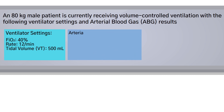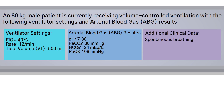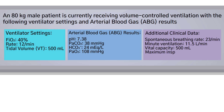His ABG results are as follows. Some additional clinical data includes a spontaneous breathing rate of 23 breaths per minute, minute ventilation of 11.5 liters per minute, vital capacity of 500 milliliters, and a maximum inspiratory pressure of negative 15 centimeters of water pressure.